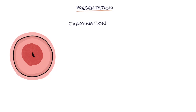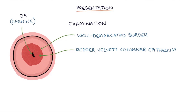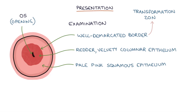Examination of the cervix will reveal a well-demarcated border between the redder, velvety columnar epithelium that extends from the endocervix through the os, or the opening of the cervix, and the pale pink squamous epithelium of the ectocervix, which covers the rest of the cervix. This border is the transformation zone.